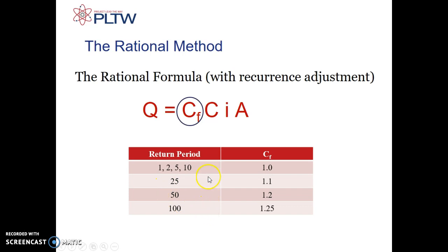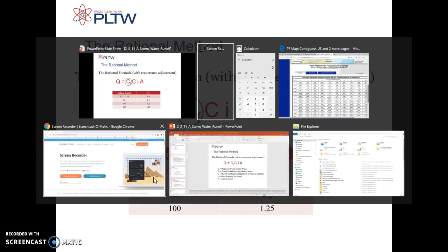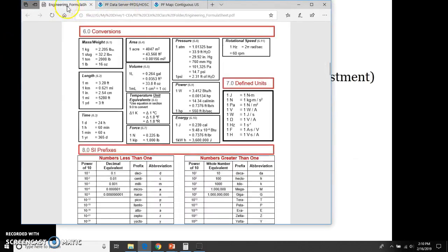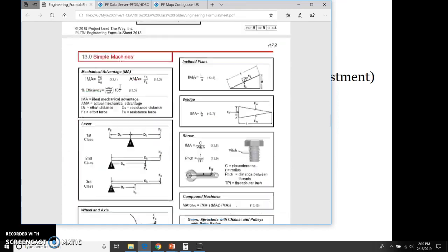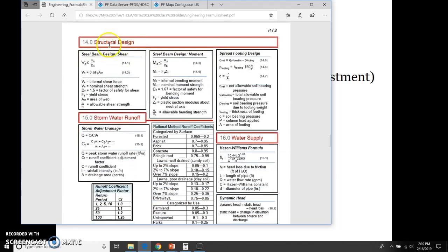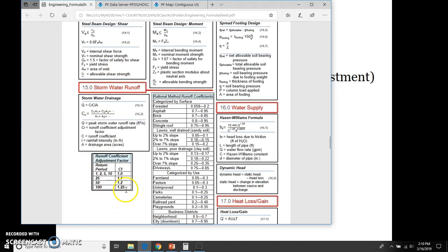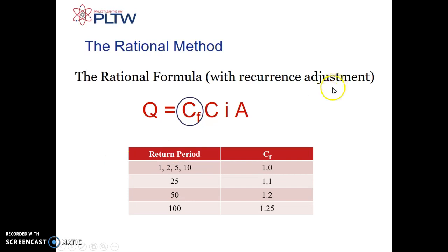Here is the runoff coefficient adjustment factor chart — this is on the formula page, on the one that starts with the words 'structural design' at the top. Let me find it. Here we go — this is the runoff coefficient adjustment factor chart that I was just telling you about.